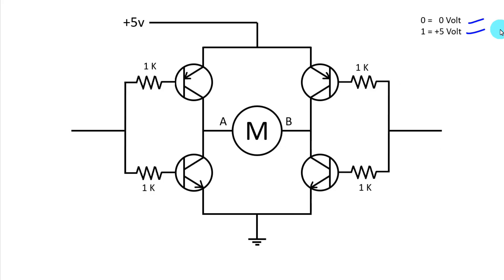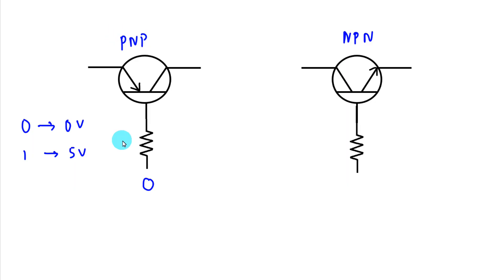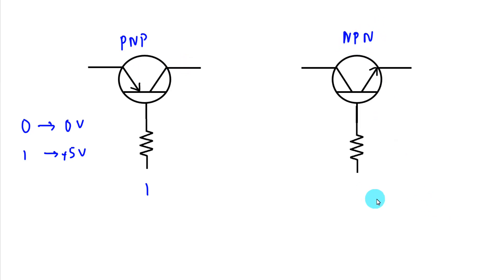Let's discuss a basic thing. This is a PNP transistor and this is an NPN transistor. 0 means 0 volts and 1 means 5 volts or positive. Whenever we provide 0 to the base of a PNP transistor, it will work as a closed circuit and current will flow from emitter to collector. If we provide 1 to the PNP transistor, it will work as an open circuit and no current will flow from emitter to collector. For an NPN transistor, whenever we provide 1 to the base, it will work as a closed circuit.